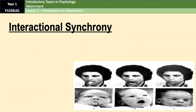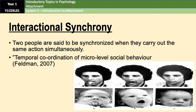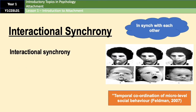Our second form of caregiver-infant interaction is called interactional synchrony. Two people are said to be synchronized when they carry out the same action simultaneously. The official definition of interactional synchrony is 'temporal coordination of micro-level social behavior,' according to Feldman in 2007. That is just a fancy way of saying that babies imitate their caregivers. So if you look at the pictures: the man sticks his tongue out, the baby sticks his tongue out; the man opens his mouth, the baby opens his mouth; the man frowns, the baby frowns. It's imitation — caregivers and babies interact so that their actions and emotions mirror each other.